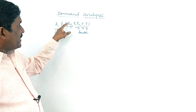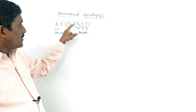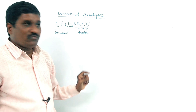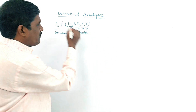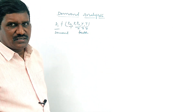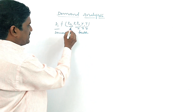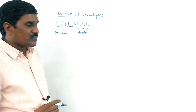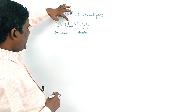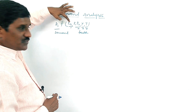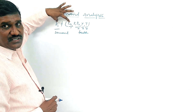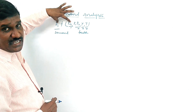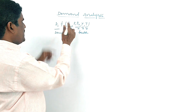Then pn is the first factor; p1, p2 is the second factor; y is the third factor; t is the fourth factor. These are all called factors. If any changes in pn, there is a change in dx. If any changes in pn, there is a change in dx. Suppose I take x here — same applies.